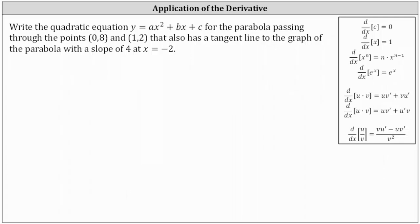We're asked to write the quadratic equation y equals ax squared plus bx plus c for the parabola passing through the points (0,8) and (1,2), that also has a tangent line to the graph of the parabola with the slope of 4 at x equals negative 2.